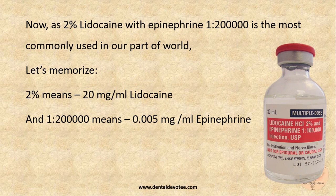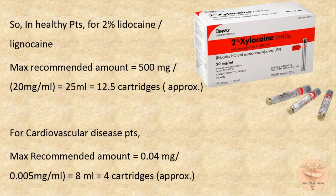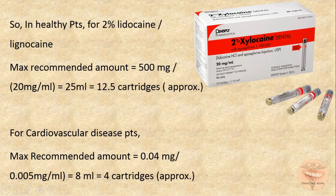2% lidocaine with epinephrine 1:200,000 is the most commonly used combination. Two key values to memorize: 2% lidocaine means 20 mg per ml, and 1:200,000 epinephrine means 0.005 mg per ml. In a healthy patient, for 2% lidocaine the maximum recommended amount is 500 mg (manufacturer's recommendation). Since 2% lidocaine is 20 mg per ml, dividing 500 mg by 20 mg per ml gives 25 ml.